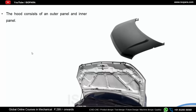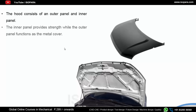A hood consists of an outer panel and an inner panel. In this image you can see the outer panel and the inner panel — the outer panel covers the inner panel. The inner panel provides the strength while the outer panel functions as a metal cover. So the outer panel covers the inner panel, and the inner panel provides structural strength to the car.